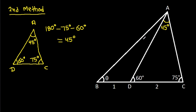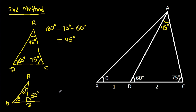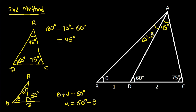And in angle ABD, this angle is theta, suppose this angle is alpha, and this exterior angle will be 60 degrees. So theta plus alpha equals 60 degrees, so alpha will be 60 degrees minus theta. This angle will be 60 degrees minus theta.